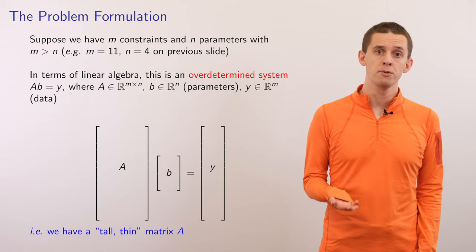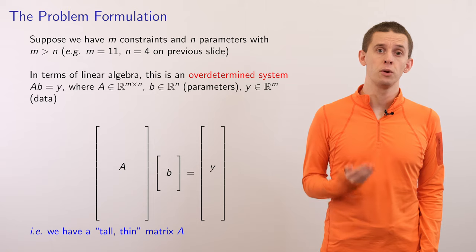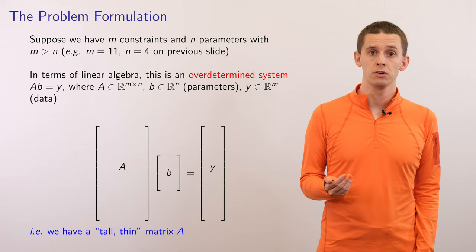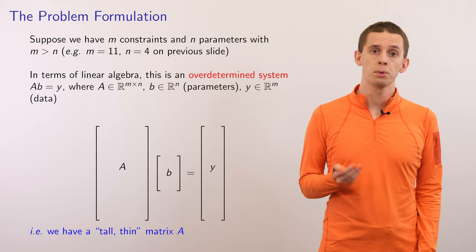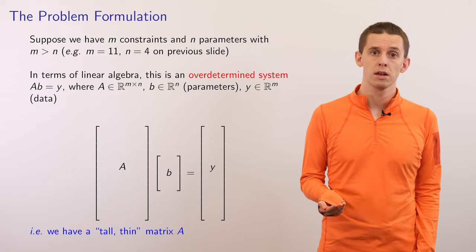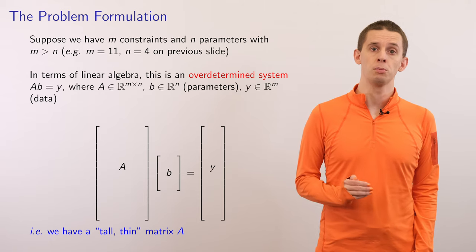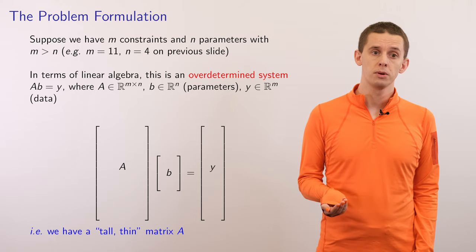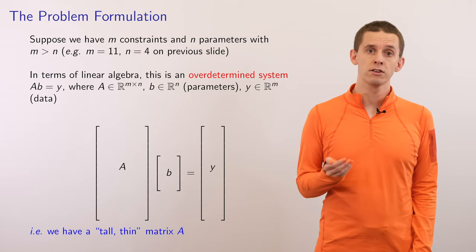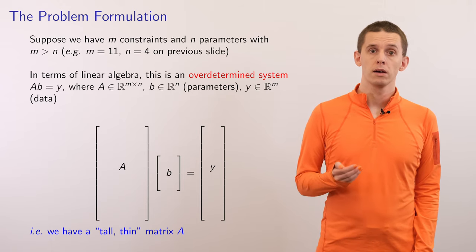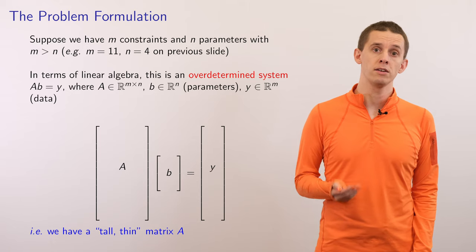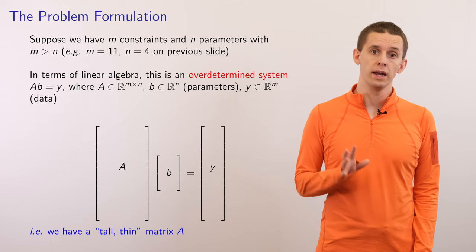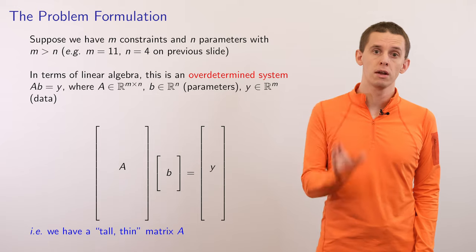Let's now look at the problem formulation. We've got m data points that give us m constraints and we're going to fit a function with n parameters — specifically a linear combination of n components, where m will be greater than n. In our previous example we had m equal to 11 data points and were fitting a cubic with n equal to 4 unknown parameters. In terms of linear algebra this is an overdetermined system: writing it as AB equal Y, our vector B of unknowns will have n components, vector Y will have m components, and matrix A will be rectangular of size m by n — a tall, thin matrix.